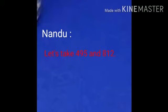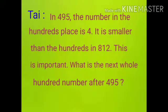Let's take 495 and 812. In 495, the number in the hundreds place is 4. It is smaller than the hundreds in 812. Now, this is important children.